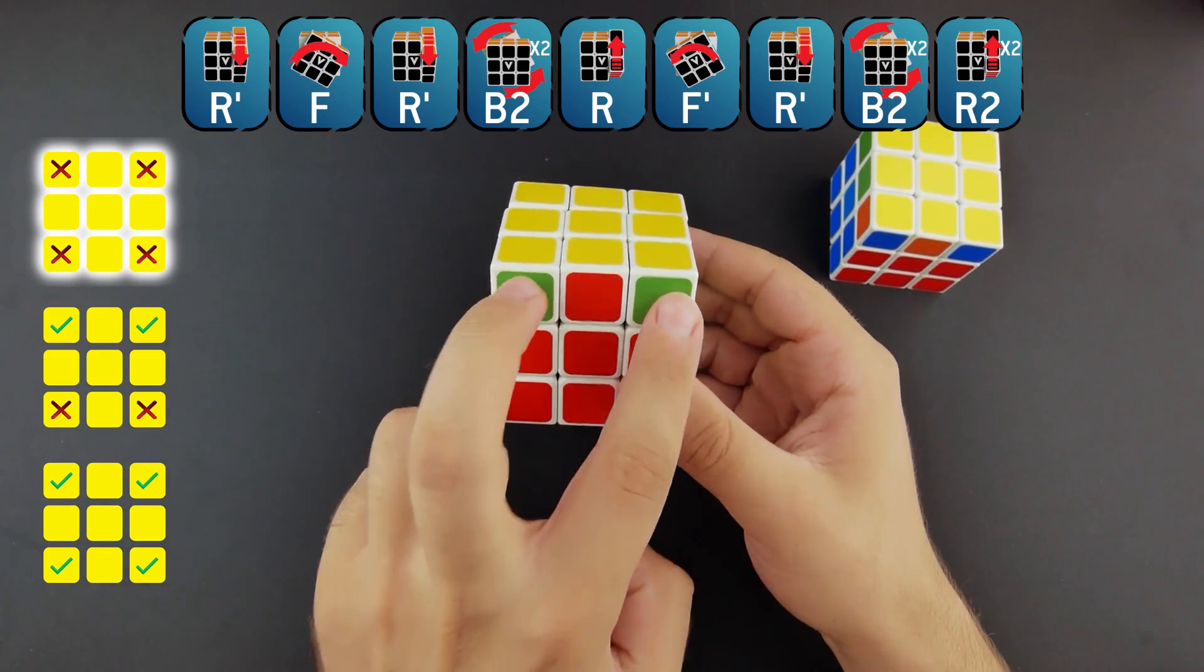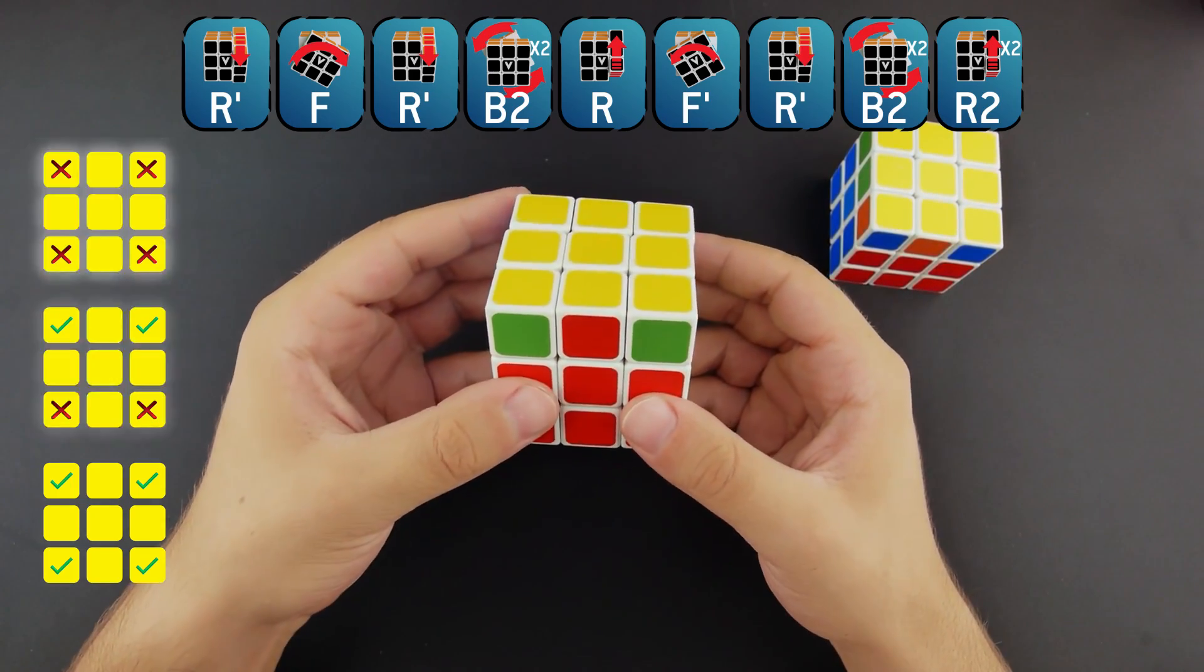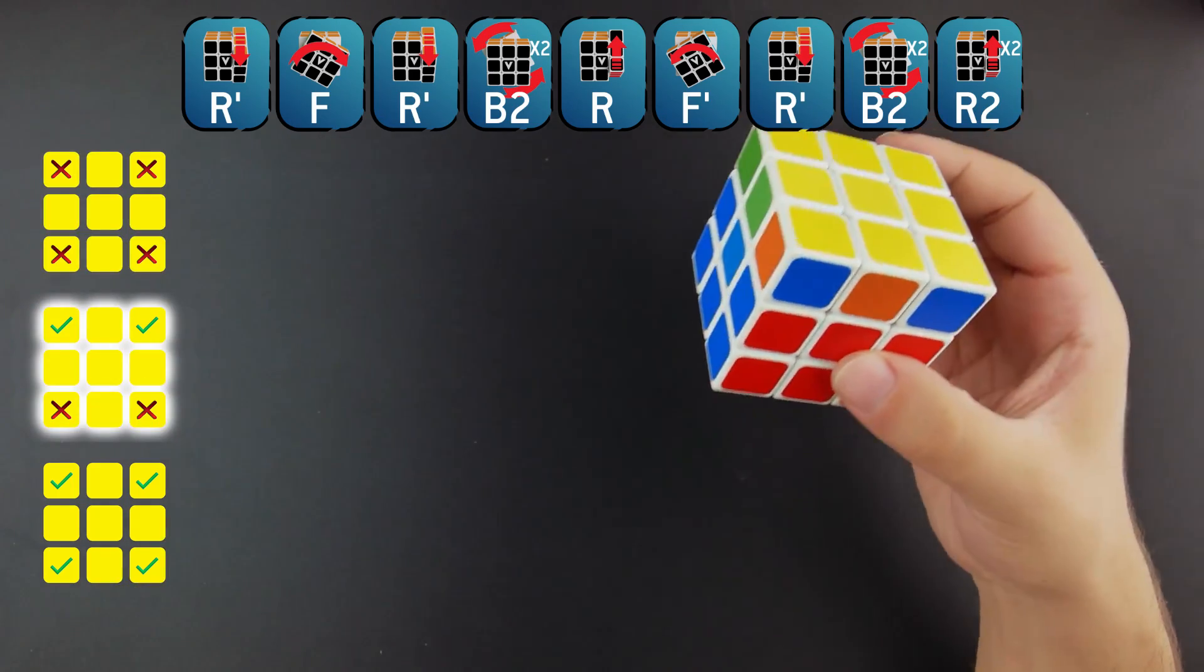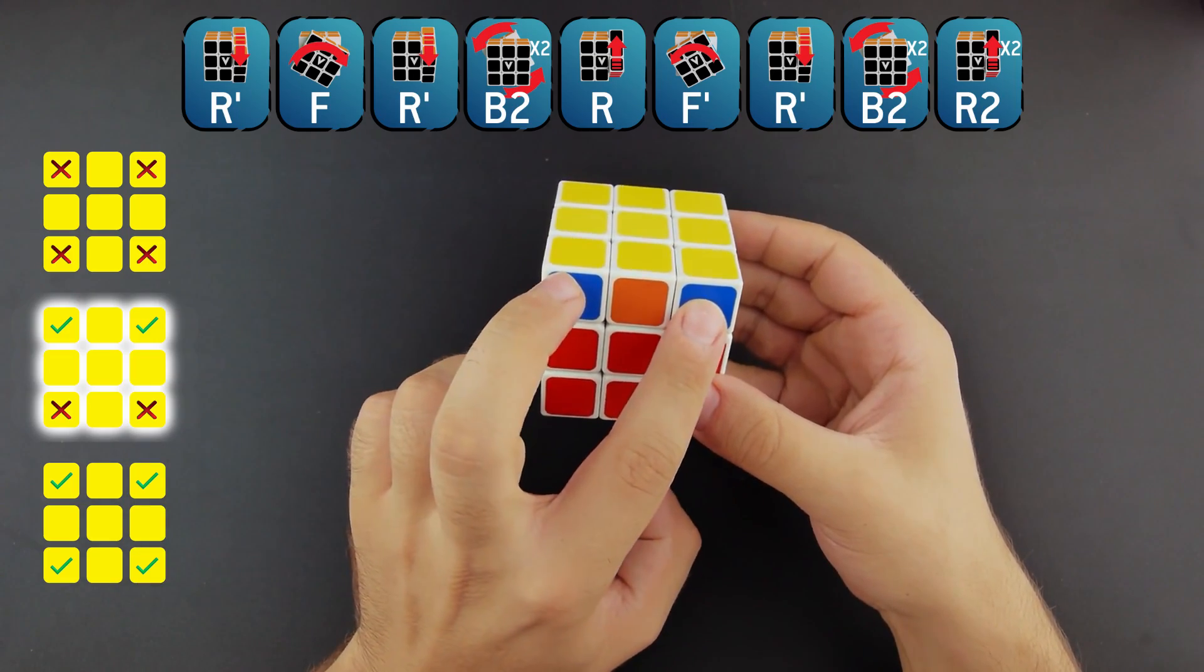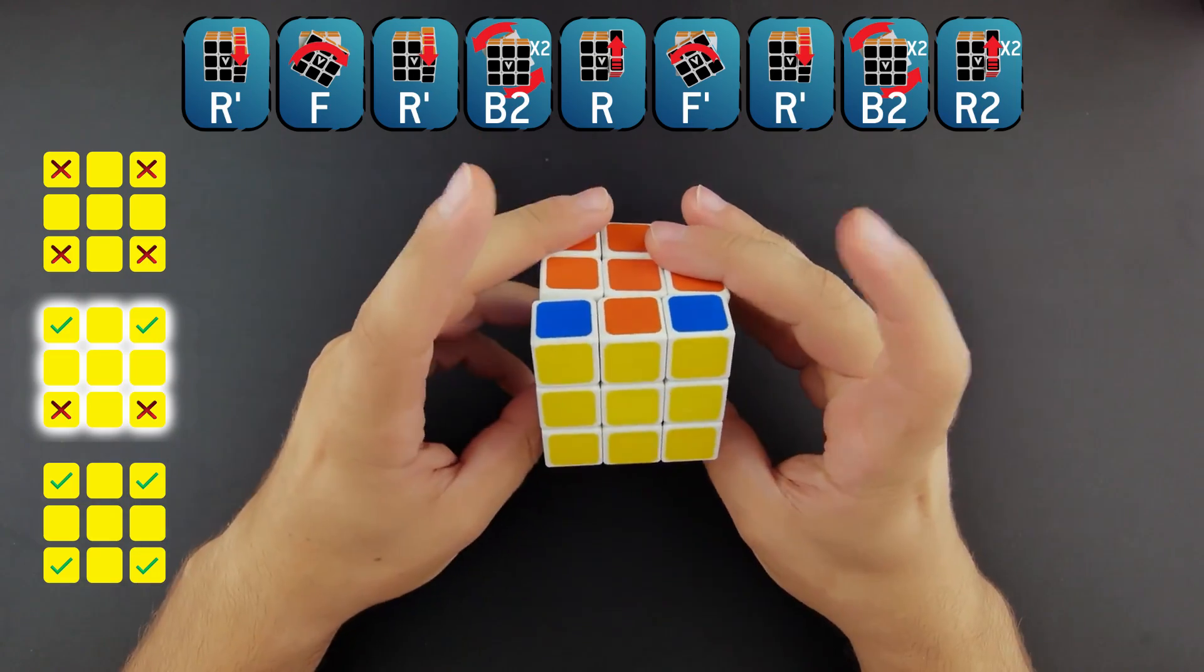We just made two of our corners match each other, which means that now we are on the second case. To solve this case, place the matching pair on the back of the cube and perform the algorithm.